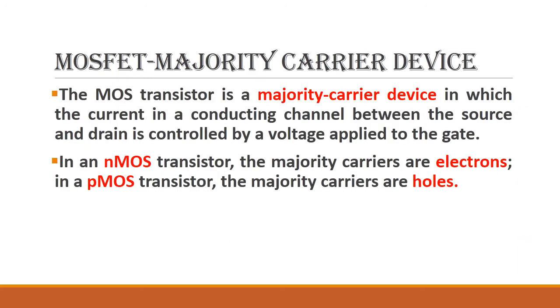MOSFET is a majority carrier device. For N-MOS transistor, the majority carriers are electrons, and for P-MOS transistor, the majority carriers are holes.